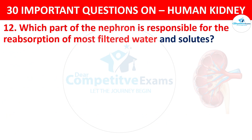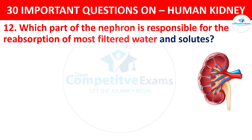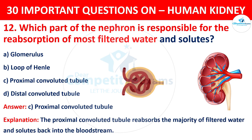Question 12. Which part of the nephron is responsible for the reabsorption of most filtered water and solutes? The options are: Glomerulus, Loop of Henle, Proximal Convoluted Tubule, or Distal Convoluted Tubule. The correct answer is Proximal Convoluted Tubule. The proximal convoluted tubule reabsorbs the majority of filtered water and solutes back into the bloodstream.